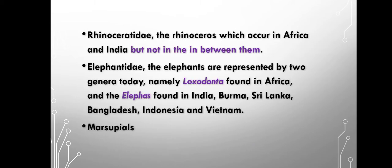Next we will discuss some families. If we talk about the rhinoceros family, you can see that both Africa and India have rhinoceros. But in the countries in between, you cannot observe them. That means they are discontinuously distributed.